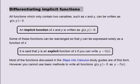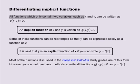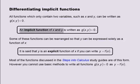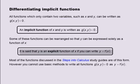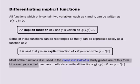All functions which only contain two variables, such as x and y, can be written as g of x and y equals zero. An implicit function of x and y is written as g of x and y equals zero. Some of these functions can be rearranged so that y can be expressed solely as a function of x. It is said that y is an explicit function of x if you can write y equals f of x. Most functions discussed in the Steps into Calculus study guides are of this form. However, you cannot use basic methods to write all functions g of x and y equals zero as y equals f of x.